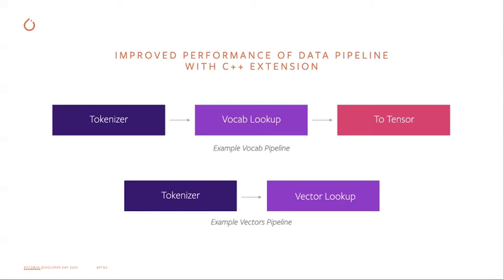After this preprocessing step, the data are sent to the DataLoader and sampler where we generate data batches. Then the data are ready for the model. We are doing our best to write these individual building blocks so you will have the full flexibility to combine them together. With the C++ extension, we are able to support JIT for all these transforms, and we believe that provides better support for production.